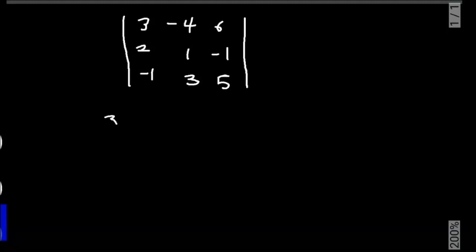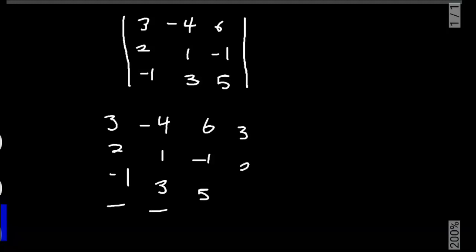The elements are: 3, 2, minus 1, minus 4, 1, 3, 6, minus 1, 5. Then we add two columns to the right — we append the first two columns: 3, 2, minus 4, 1.